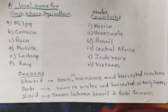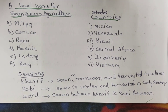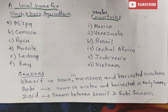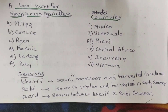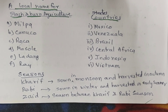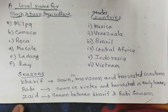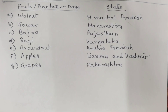Seasons: Kharif - sown in monsoon and harvested in autumn. Rabi - sown in winter and harvested in early summer. Zaid - season between Kharif and Rabi seasons.